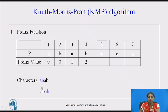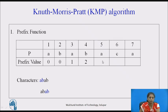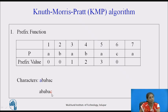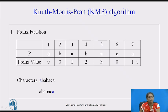For ABABA: prefix ABA and suffix ABA both match, so prefix value is 3. For ABABAC: the pattern ends with C but no prefix starts with C, so going through all deletions yields no match — prefix value is 0. For the final character A: only one character matches, so prefix value is 1. These are all the prefix values for the pattern.